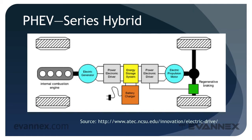The PHEV series architecture uses an internal combustion engine, but not to drive the wheels of the car. Rather, an ICE is used to drive a generator that charges the battery. The battery can also be charged from the grid using a battery charger. Power from the battery is passed through control electronics to an electric motor, which drives the wheels. Like its counterpart in a BEV, the regenerative braking component translates the kinetic energy of the car into electricity to recharge the battery.